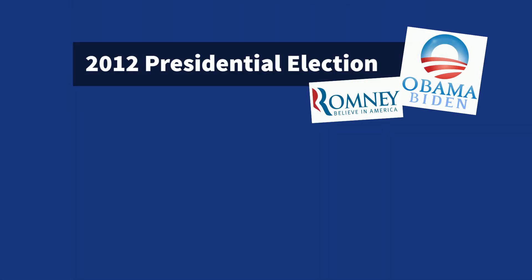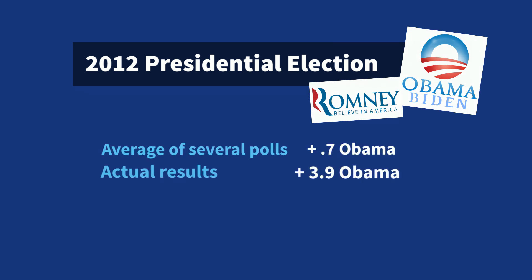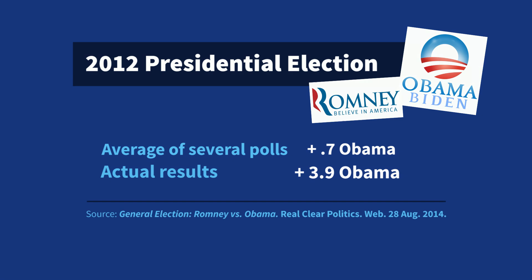Although most polling organizations have been using some type of probability sampling since 1948, there are still many people that have a hard time believing that a sample of less than 2,000 adults could accurately tell us anything about all 240 million adults living in the United States. For example, in the 2012 presidential election, many pollsters came within a couple of percentage points of estimating the votes of over 130 million voters. Many pundits and critics said the polls must be wrong and that the polls were biased. But in the end, most of the polls were within a couple of percentage points from the actual election results.